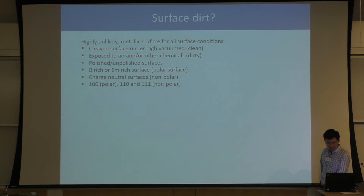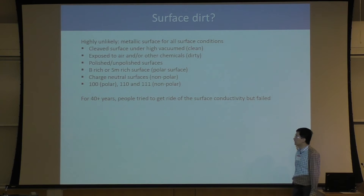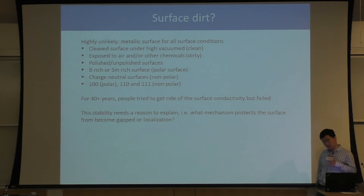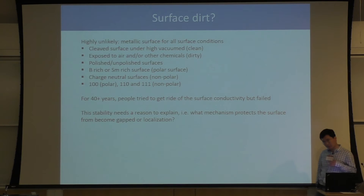This surface condition independence and robustness requires explanation. In the last several decades, people tried very hard to get rid of this low temperature conductivity by many different techniques, and they never could. Currently, on the theoretical side, we only know one theoretical mechanism that provides such strong protection against gap formation and against Anderson localization — that is a topological surface state.